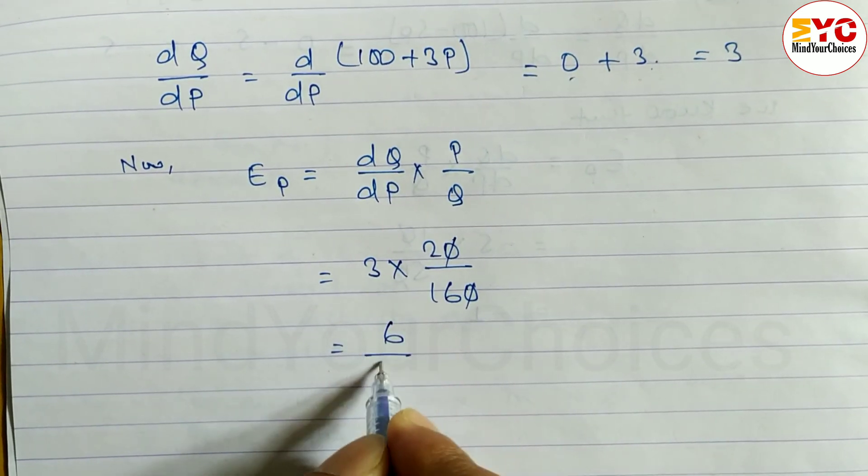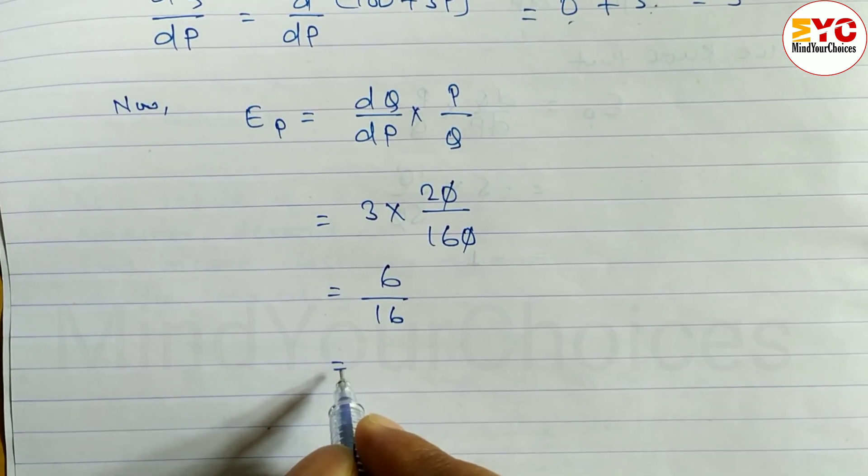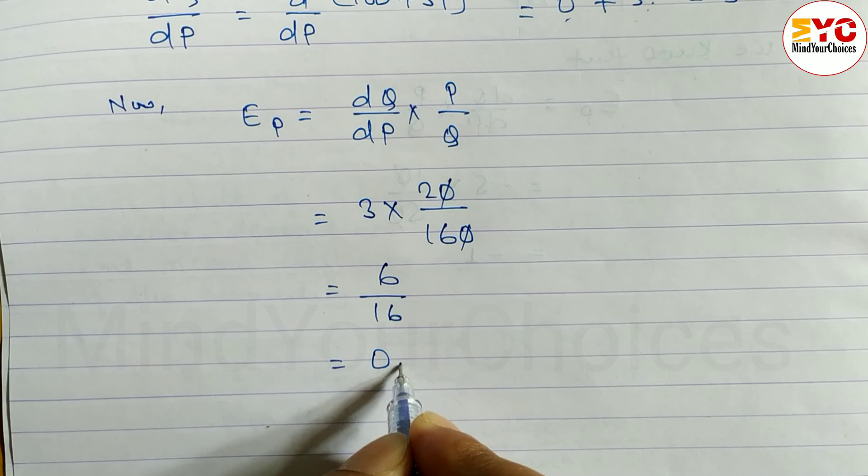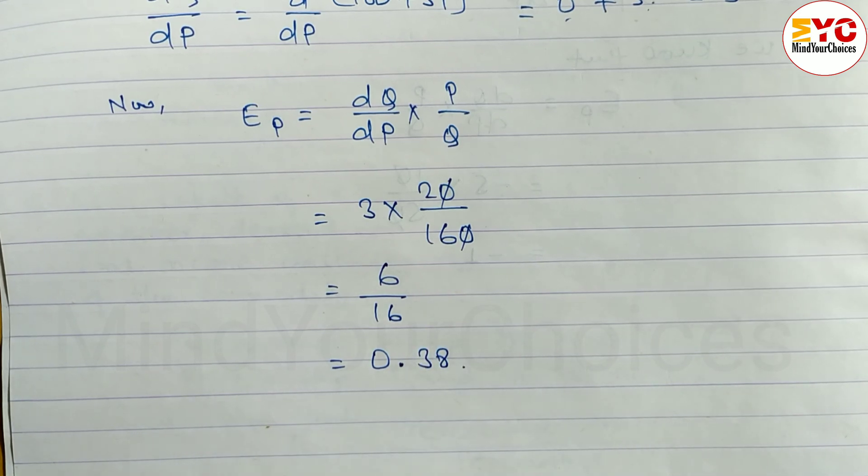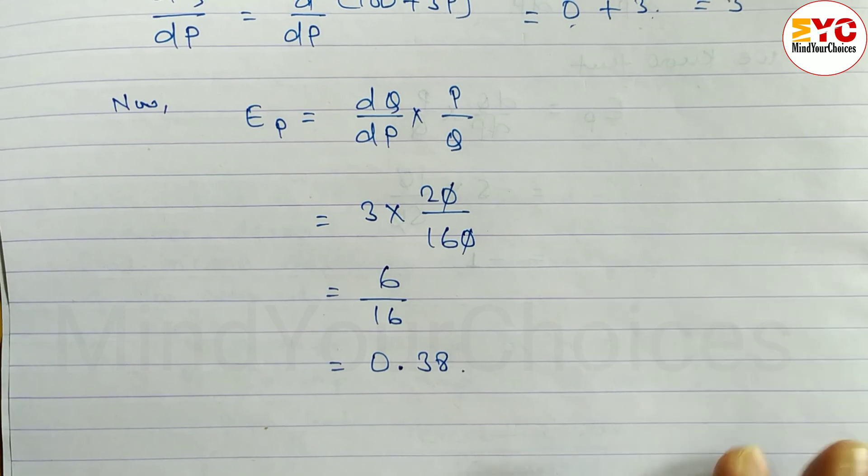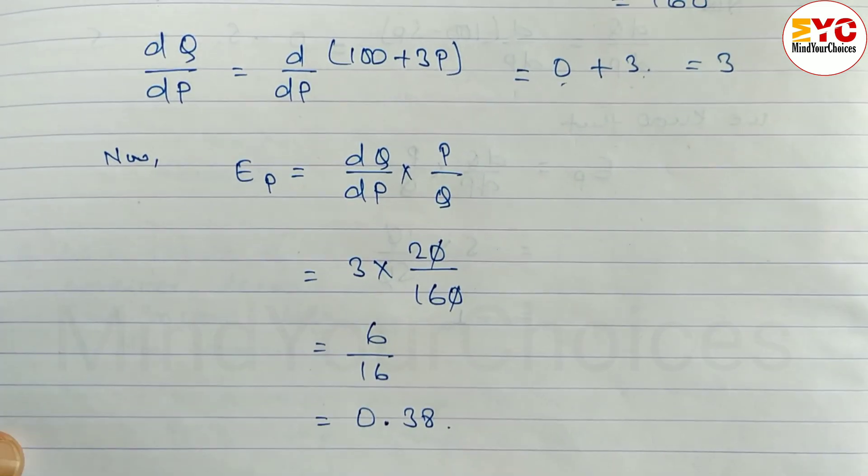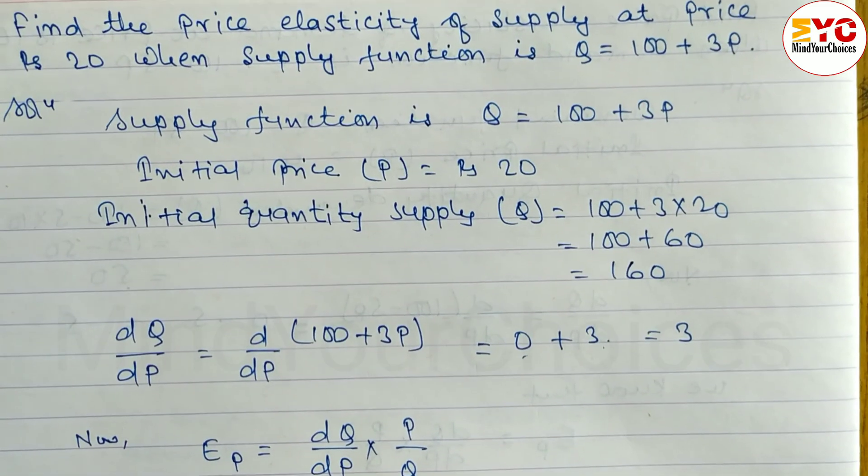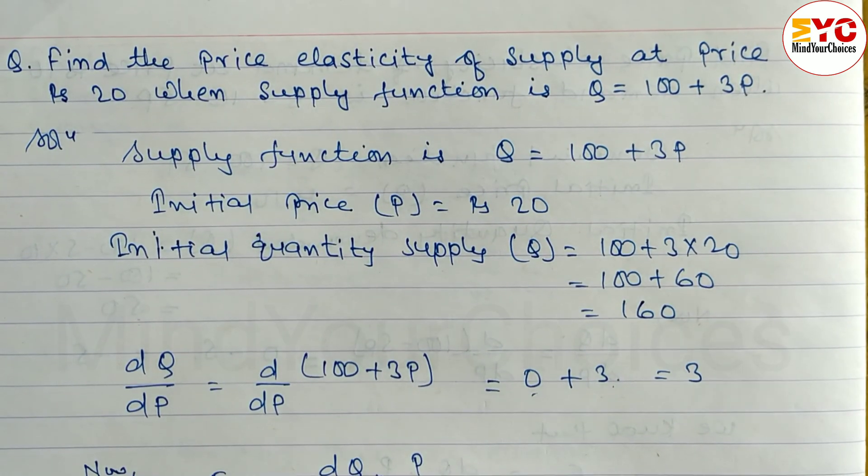Price elasticity of supply is equal to 0.38. Hope you understand this video, if you understand please hit the like button. If you want to subscribe, do not forget to share with your friends. Thanks for watching till last, keep supporting and keep sharing.